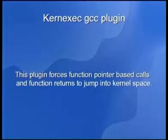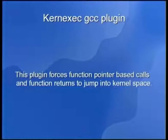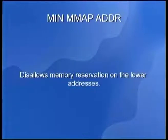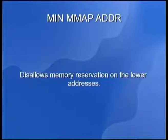We also have the KernExec GCC plugin — it's basically some magic that modifies the code before compiling to get the kernel code to work better at preventing execution attempts in kernel space. And of course we have the classical minimum mmap address — this is already in normal Linux, but we've had it since earlier — basically telling the process it cannot map anything at that particular low address we know will cause problems, unless you explicitly allow it.